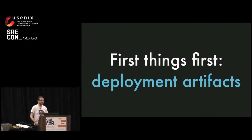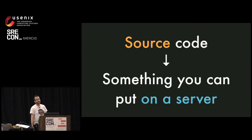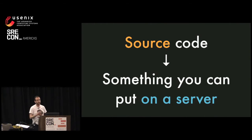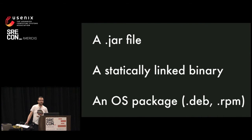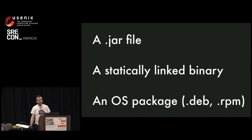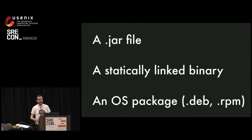But first things first. Before we launch into containers and how to manage them, I want to talk about deployment artifacts. A deployment artifact is something where you take your source code out of a repository like Git or Mercurial, and you turn it into something which you can put on all your servers. You'll have heard of many examples: jar files on the JVM, statically linked binaries from Go, or OS packages like Debs or RPMs. All of these give you something you can take, put on all your servers, configure, and run your app.